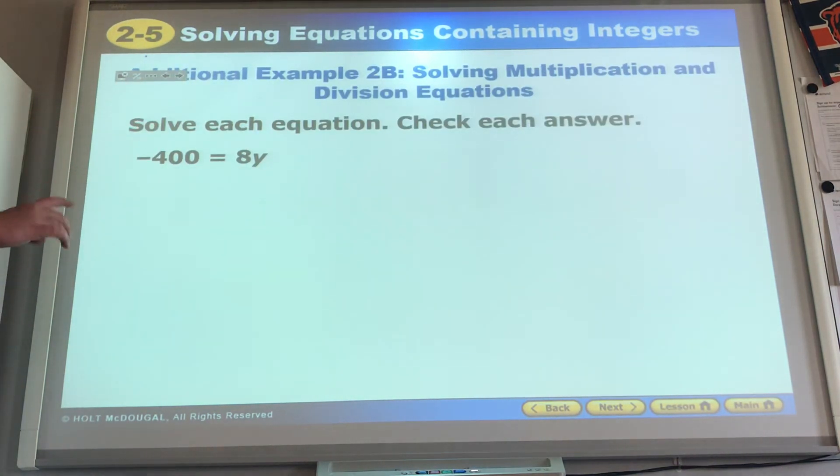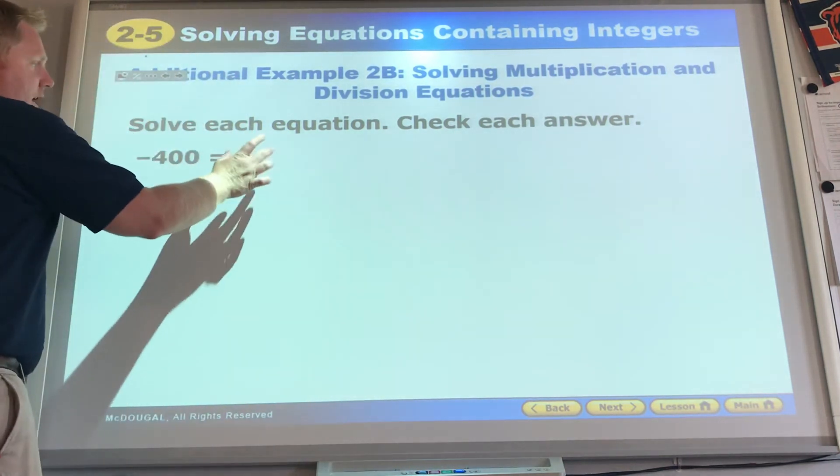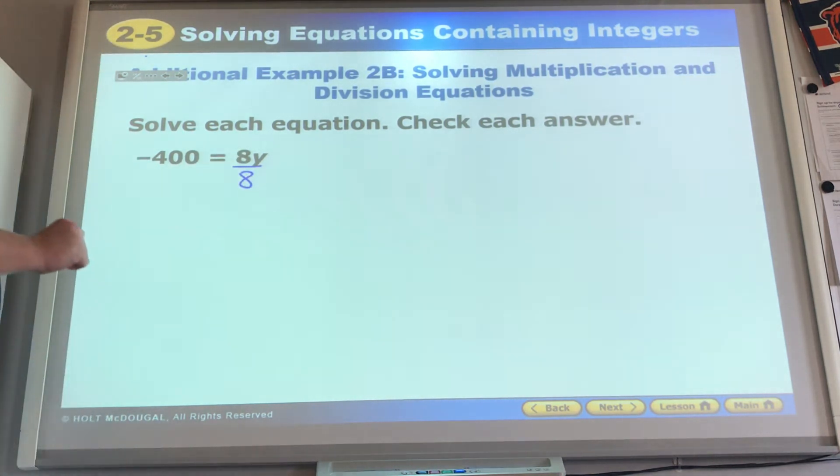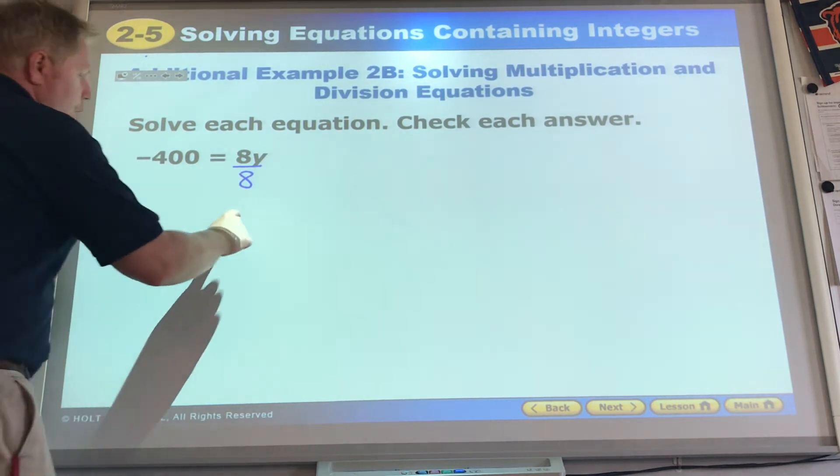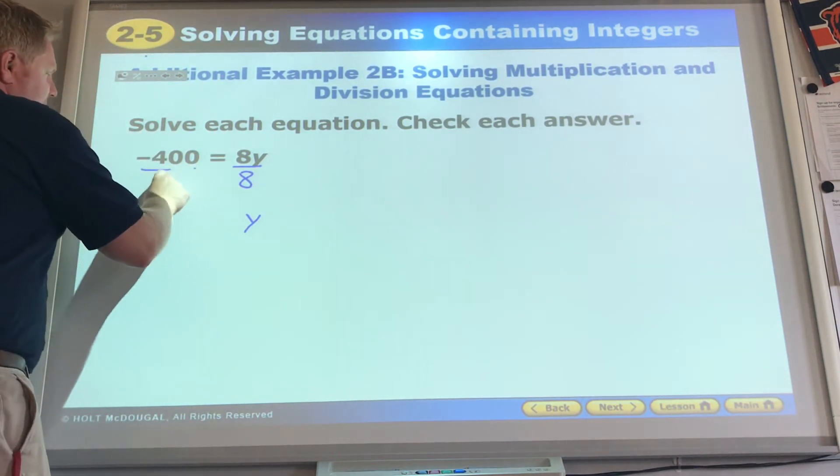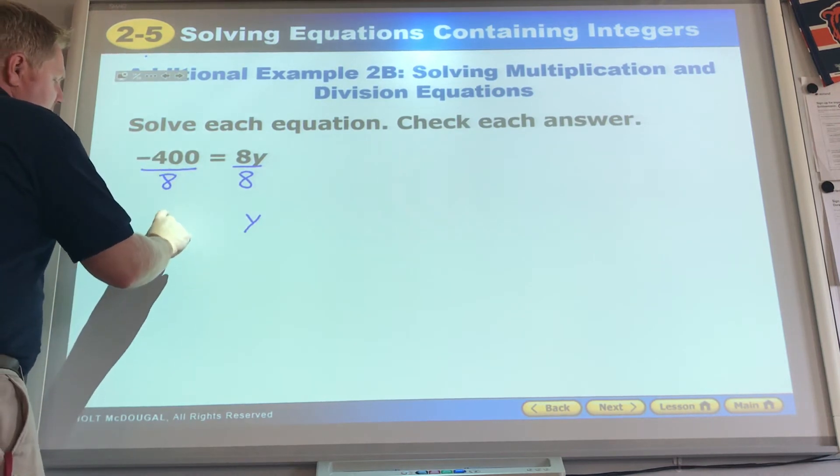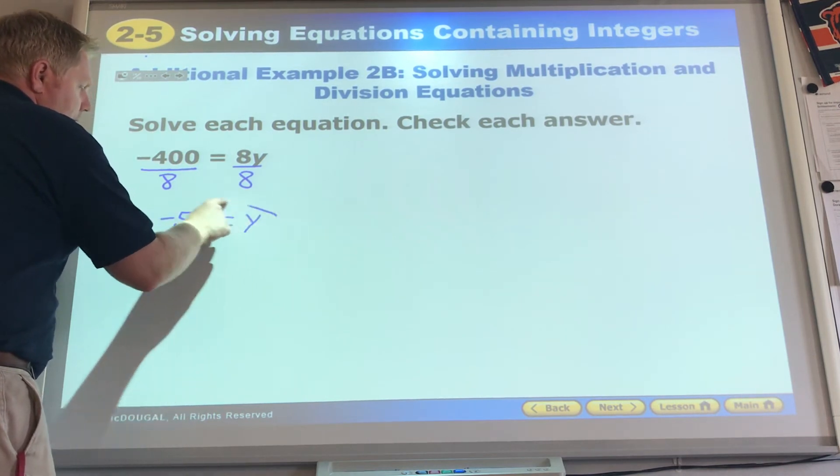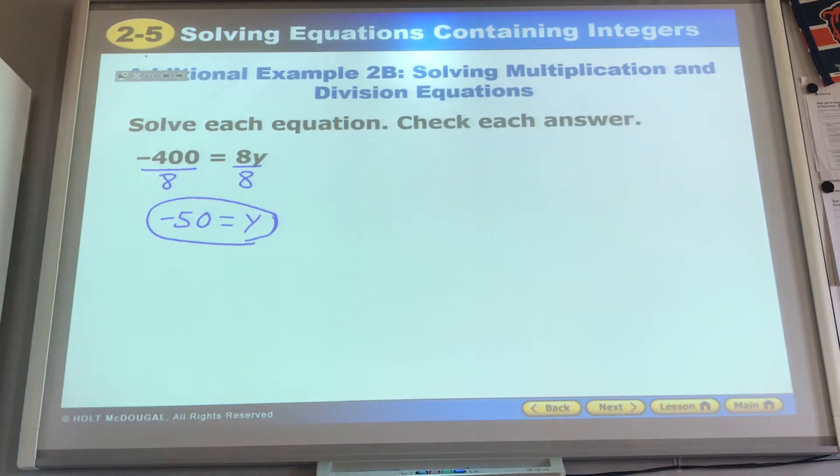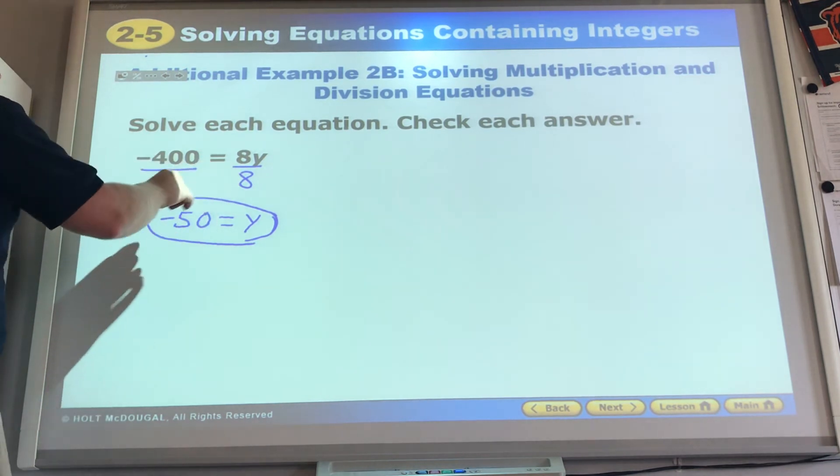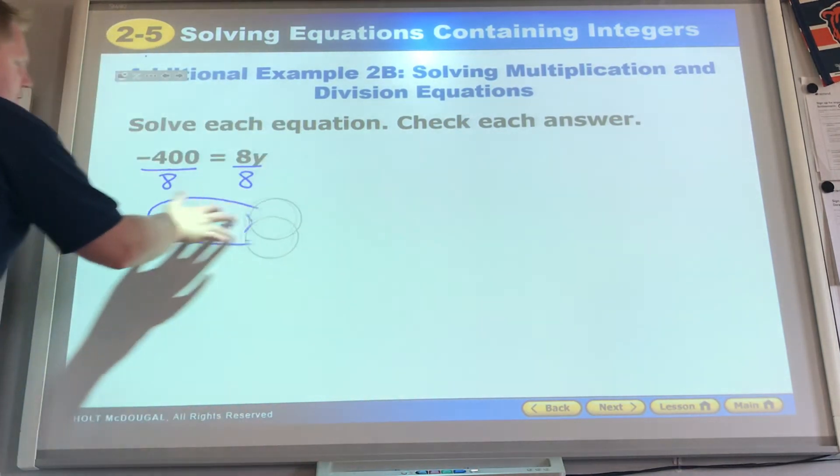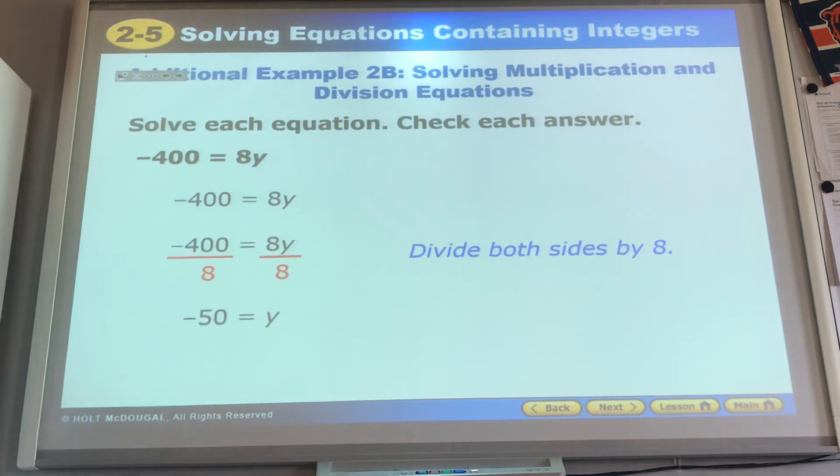Remember, you must divide by whatever is there. So in this case, there's multiplication, 8 times y. So we work on that side because that's got the variable. We divide by 8. There's a positive 8 on top. So we divide by a positive 8. So we get a 1y down here. We divide by 8. So that makes negative 50 for our answer. Negative 50 equals y. Signs are different, so we know our answer is negative. We must keep these things straight because if we don't, they'll cost us lots of points.